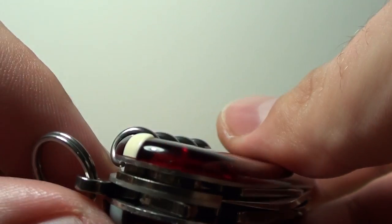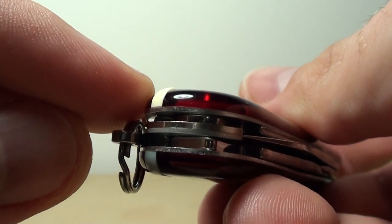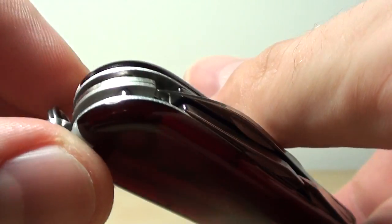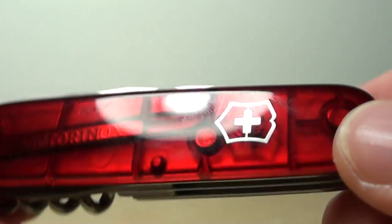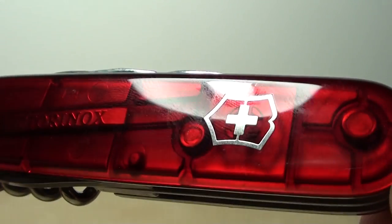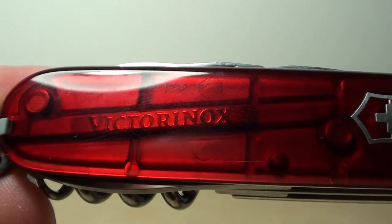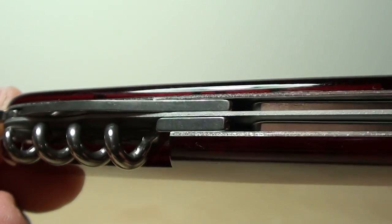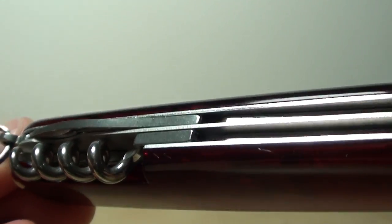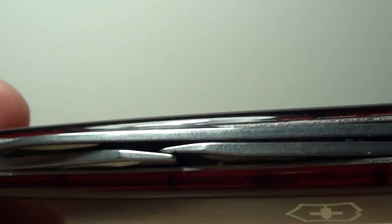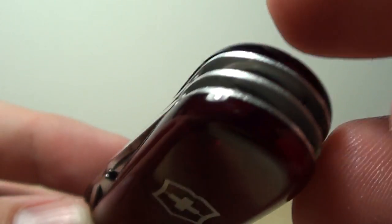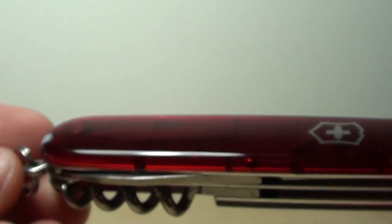And then you have the tweezers and toothpick. Let me show you some more close up shots of the knife, so it's two layers as you can see. And as usual, it's very, very well built. As already mentioned, it has a lifetime warranty.